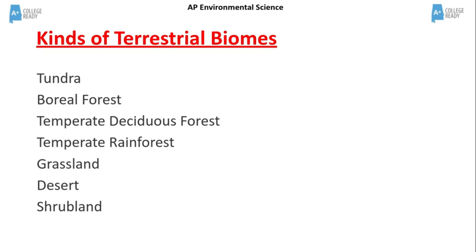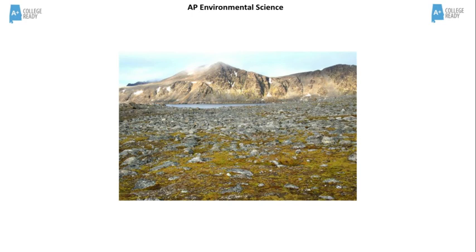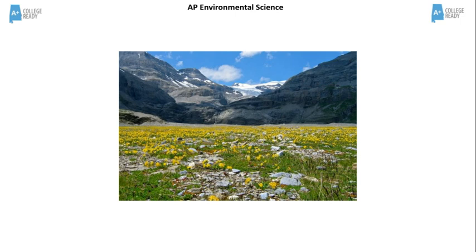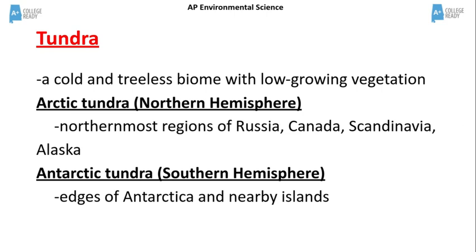These are pictures of tundra. Notice no trees. The tundra is a cold treeless biome with low growing plants. The arctic tundra in the northern hemisphere is found in the northernmost regions of Russia, Canada, Scandinavia, and Alaska.